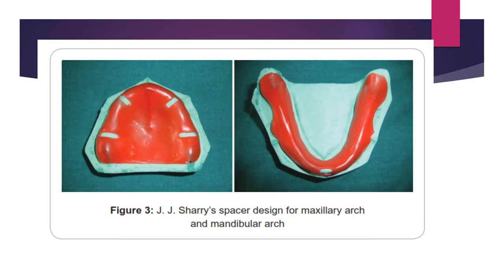Coming to JJ Shady's spacer design for the maxillary and mandibular arch. Based on minimal pressure technique, it recommends adaptation of a layer of base plate wax over the whole area outlined for the tray, even in the PPSA. He recommends placement of four tissue stops, 2 mm in width, located in the molar and cuspid regions, which should extend from the palatal aspect of the ridge to the mucobuccal fold, and one vent hole in the incisive papilla region before making the final impression with metallic oxide impression material.